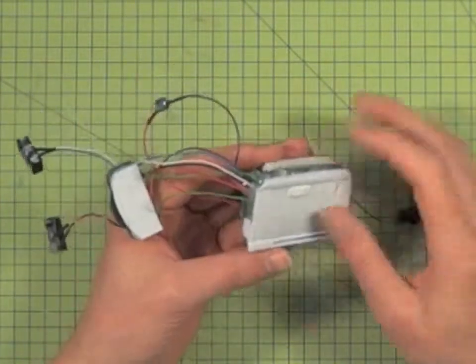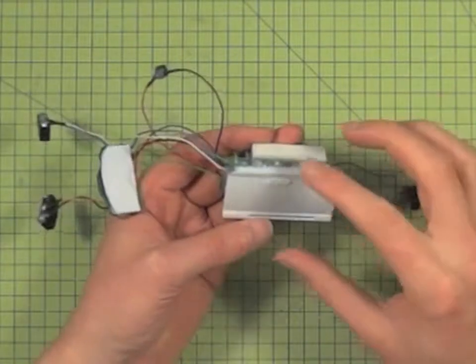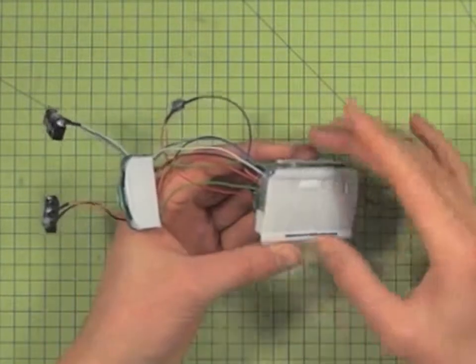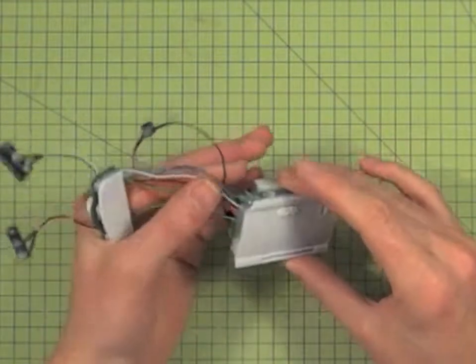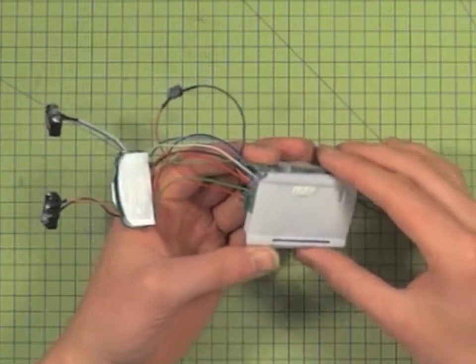The other thing I've done is gone around with some hot melt and basically just pinned the wires down, so that when I flex them it's less likely to fatigue the solder joint and cause it to crack.